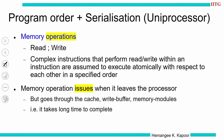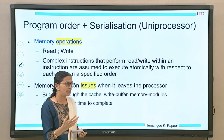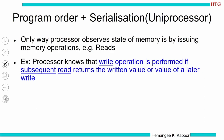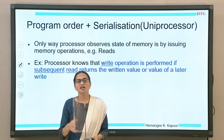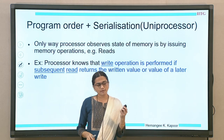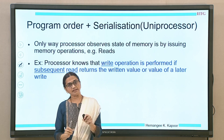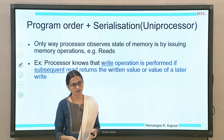A memory operation issues when it leaves the processor. Just issuing does not finish the operation because it has to go through a long path — through the cache, through the write buffer, finally to the memory module, and if on a global interconnect, through the interconnect — so this is going to take a long time to complete. The only way a processor knows its memory operation is completed is by issuing subsequent reads.